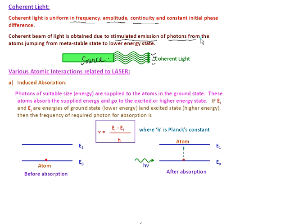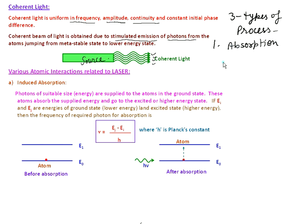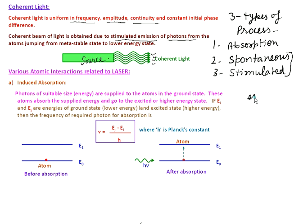These are the important processes which are responsible for laser light. They are basically of three types. Three types of processes take place in the laser action. Number one is known as absorption, number two is spontaneous emission, and number three is stimulated emission. These two are related with the emission of the electron.